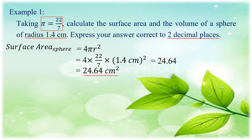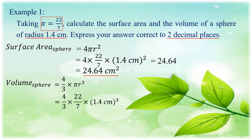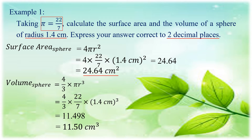Note that the surface area is always expressed to the second power. Now let us solve the volume of the sphere using 4/3 times pi times R cubed. We have 4/3 times 22/7 times 1.4 to the power of 3, where 1.4 cubed is 1.4 times 1.4 times 1.4. Multiplying gives 11.498, and expressed to two decimal places, the volume is 11.50 cubic centimeters.